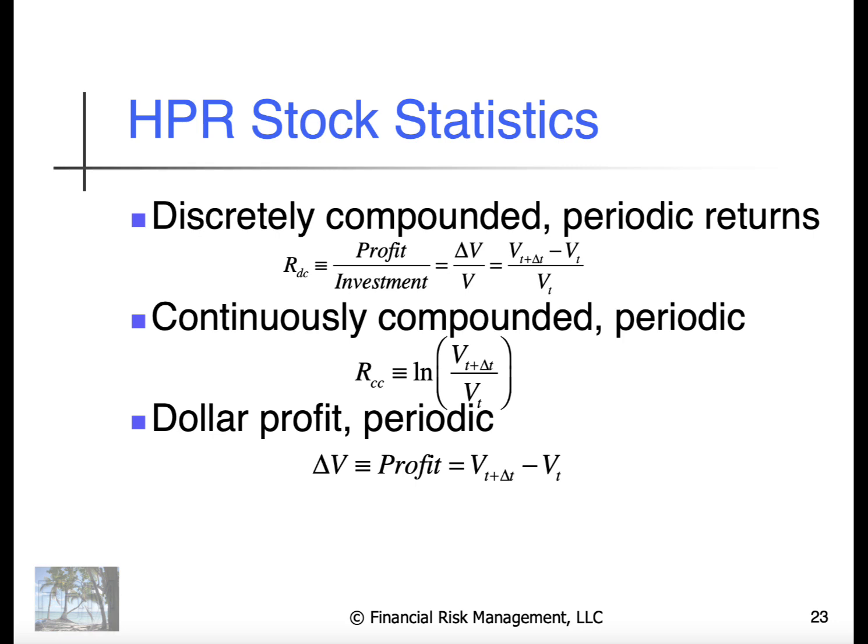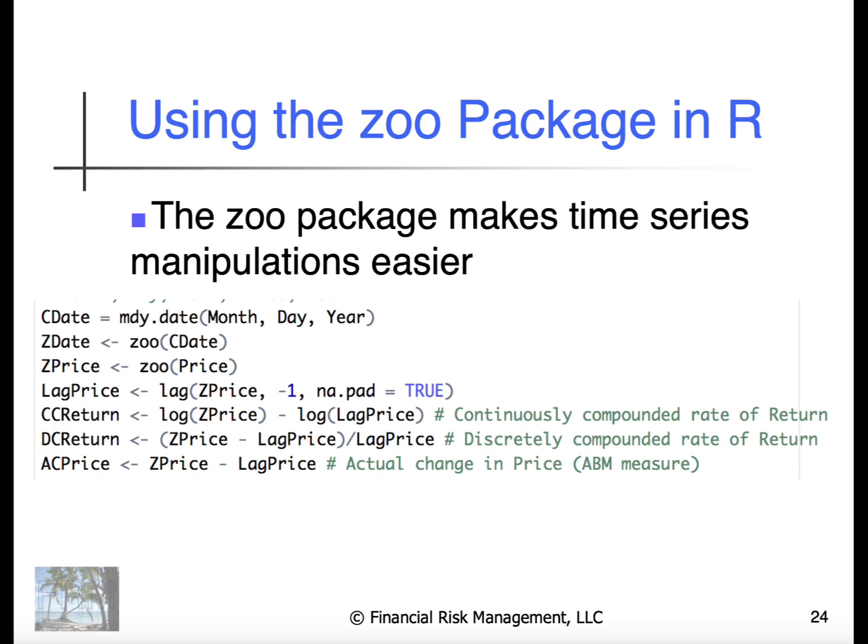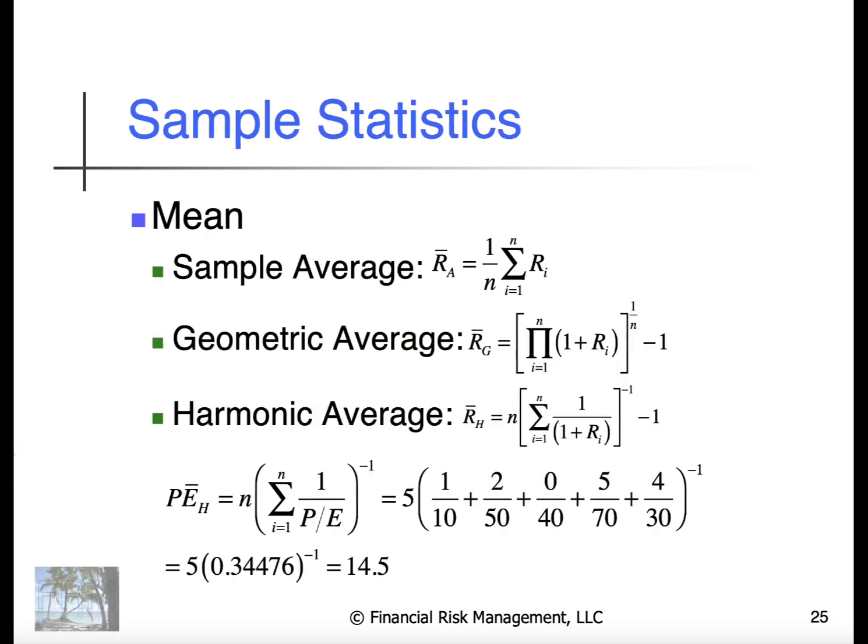These all give roughly the same results, but they vary depending on context. A zoo is a particularly good package in R to handle these calculations. There's a snippet of code provided that shows how to calculate the continuously compounded returns, the discretely compounded returns, and the actual change in price.